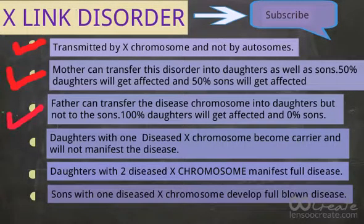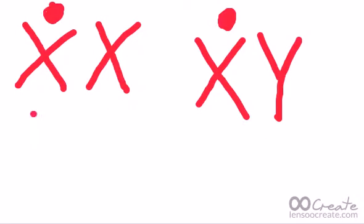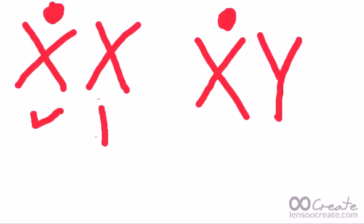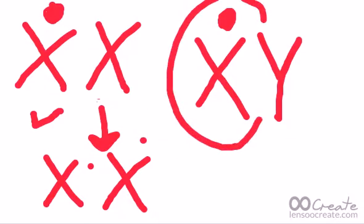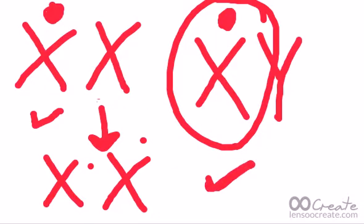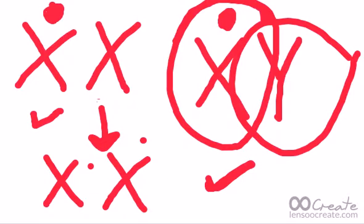Point number four: daughters with one diseased X chromosome become carriers and will not manifest the disease. The daughter with one diseased X chromosome just becomes a carrier because daughters have two X chromosomes, and one diseased chromosome does not manifest as full-blown disease. Daughters require at least two sets of diseased chromosomes for the full-blown disease, whereas sons require just one copy of the diseased X chromosome. Sons have only one X chromosome and one Y, so at least one normal X chromosome is necessary to become a carrier.